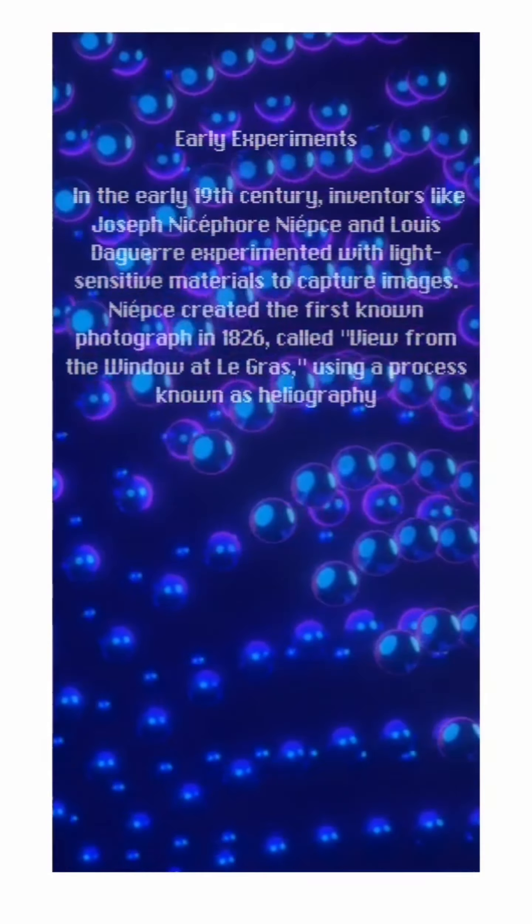Calotype: William Henry Fox Talbot developed the calotype process around the same time as Daguerre, but his method allowed for multiple copies of an image to be produced. It involved coating paper with light-sensitive chemicals, exposing it in a camera, and then developing the latent image.